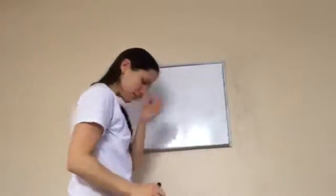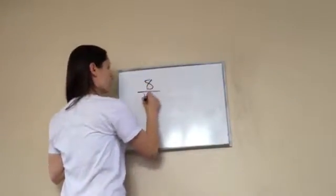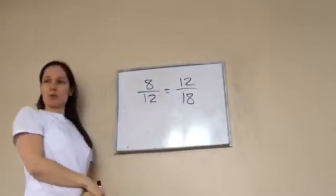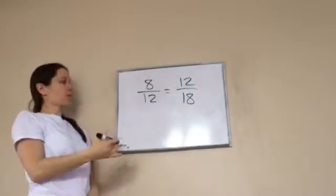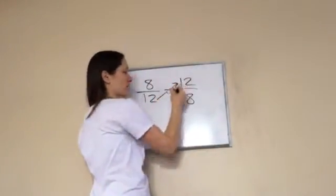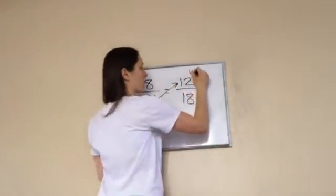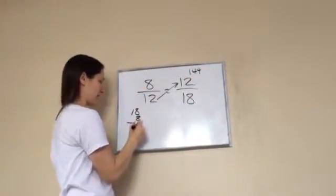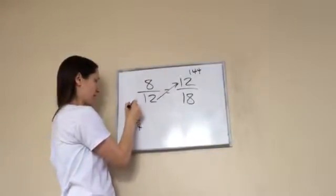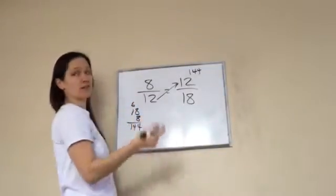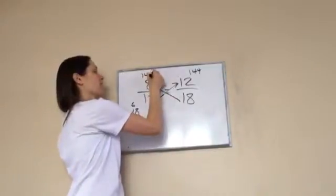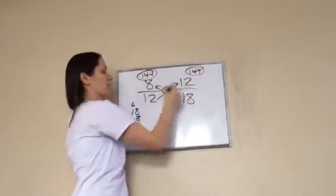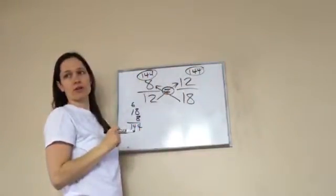This one's a little bit bigger. 8 twelfths and 12 eighteens. Is that equal proportion? Well, this one you're not going to just automatically know. I know that 12 times 12 is 144, but I don't know what 18 times 8 is. So let's do that real quick. 8 times 8 is 64, 8 times 1 is 8, 9, 10, 11, 12, 13, 14. Yeah. So are these equal proportions? Yep. Yes they are. And is either one of these bigger? Nope. The exact same.